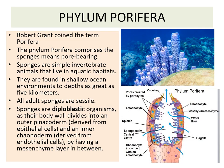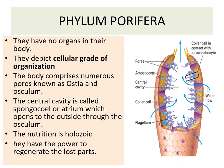Sponges are diploblastic organisms as their body wall divides into two layers. The outer layer is known as pinacoderm, which is derived from epithelial cells, whereas the inner layer is known as coanoderm, which is derived from endothelial cells. In between these two layers, a mesenchyme layer is present. Sponges do not have any organs in their body, so they have a cellular grade of organization.